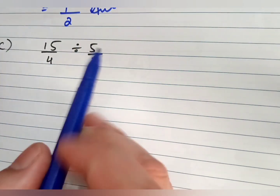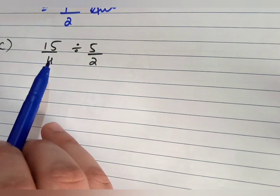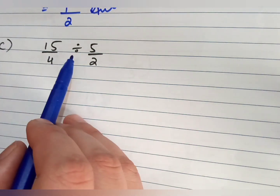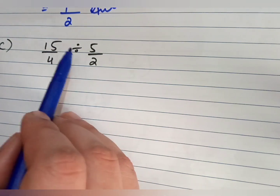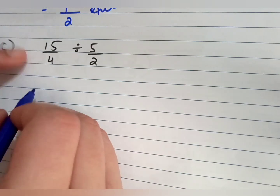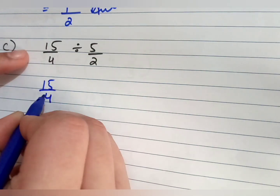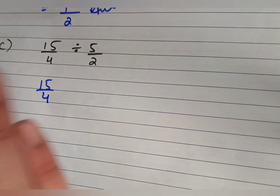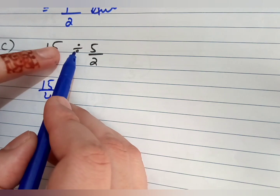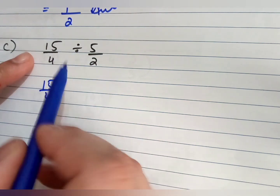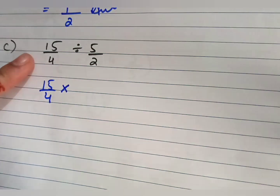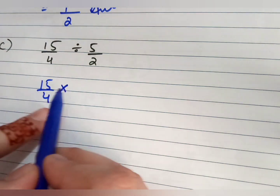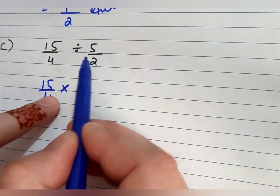Now in Part C, we have a division sign. Whenever you have a division sign, you first convert it into multiplication. We saw this type of question in practice. Whenever there's a division sign, convert it to multiplication — the term next to the division sign becomes its reciprocal.